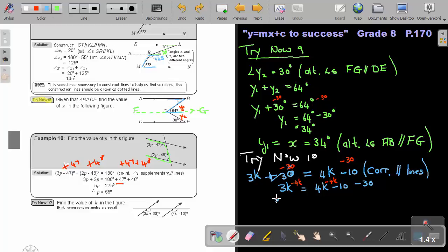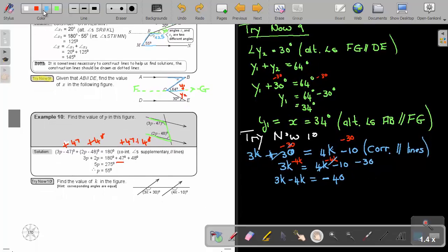What will this be? 3K minus 4K, that cancels. I can also remember if the signs are the same, we keep the sign and add the numbers. If the signs are different, I subtract the numbers. So, that will be a difference of 1. And I take the sign in front of the biggest number. So, it's negative 1K equals negative 40.